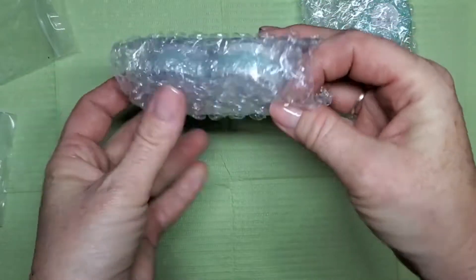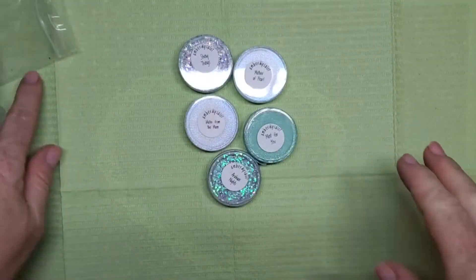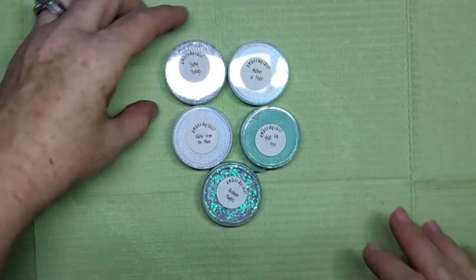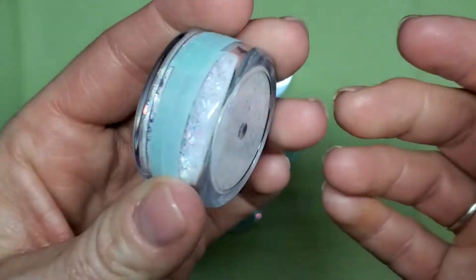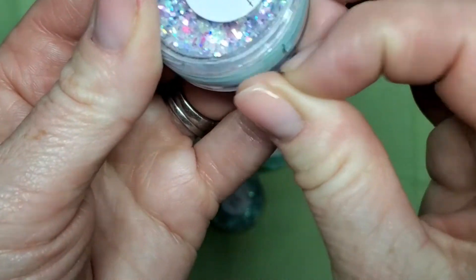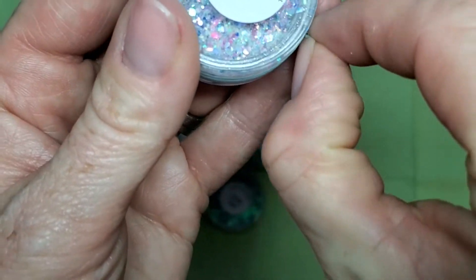All right, so these are the five that I ordered. The first one is called Shiny Things. I like the way she puts the little tape around there so nothing spills out. How gorgeous!